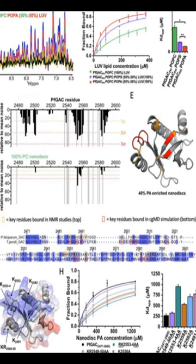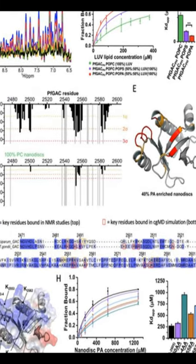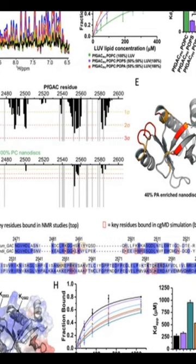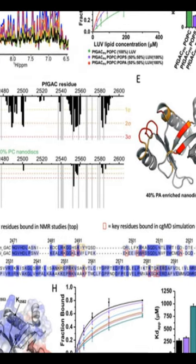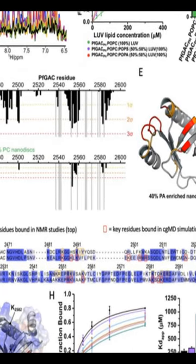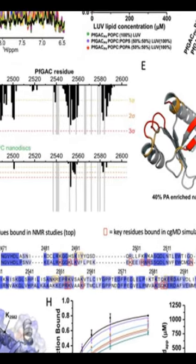The phylum Apicomplexa contains intracellular parasites that use substrate-dependent gliding motility to invade host cells, egress from the infected cells, and cross biological barriers.